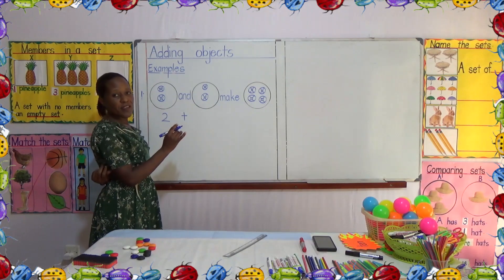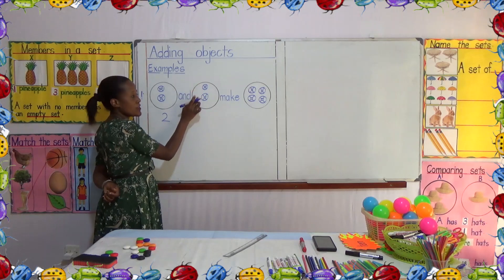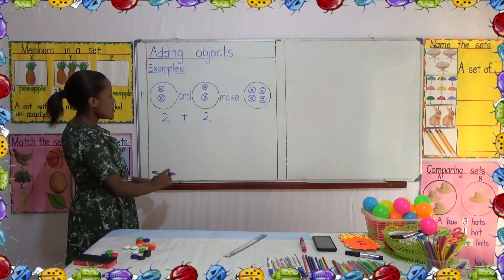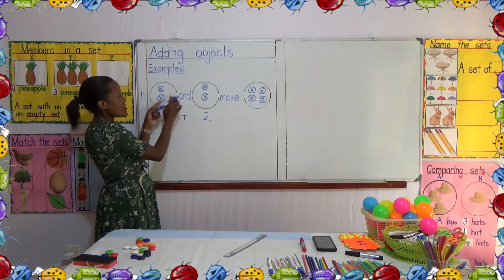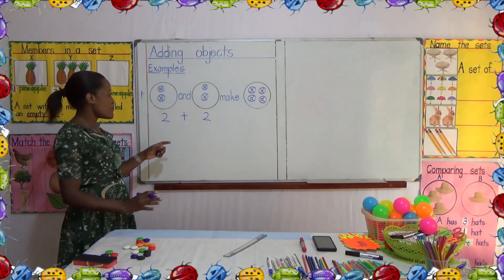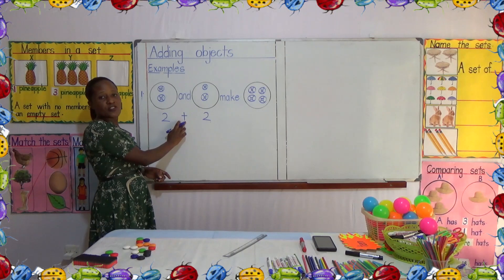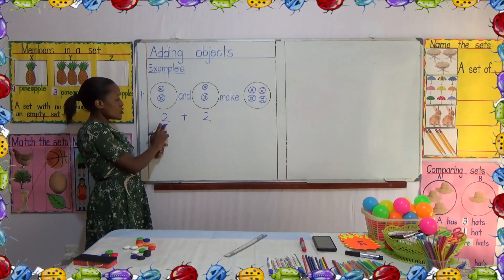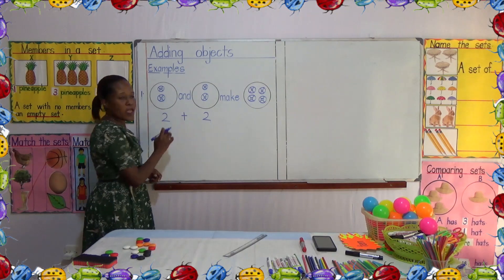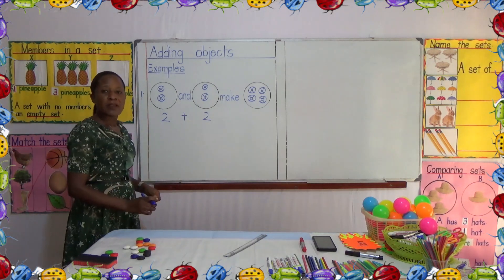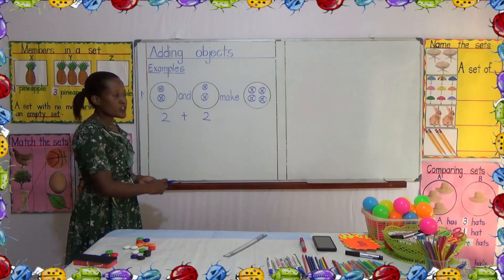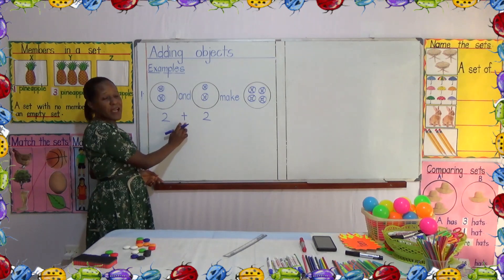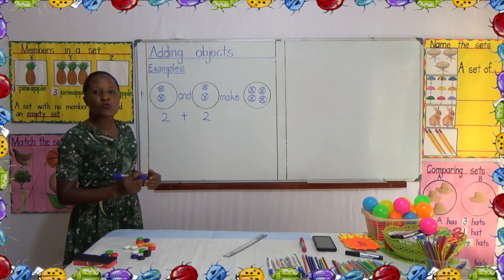So we count the members in this other set. Let's count together. One, two. I will write two. So we want to find out what does this and that make. This time we have written using that addition sign, but when we are reading, we shall read it as two plus two. Everybody say plus. Plus. We shall read it as plus. So we have two plus two.